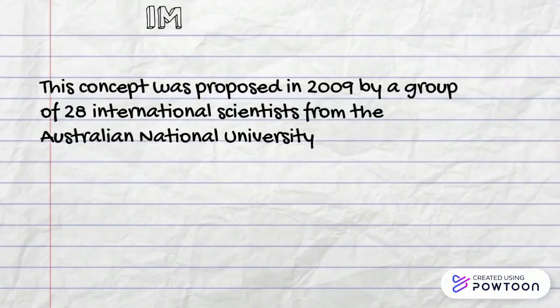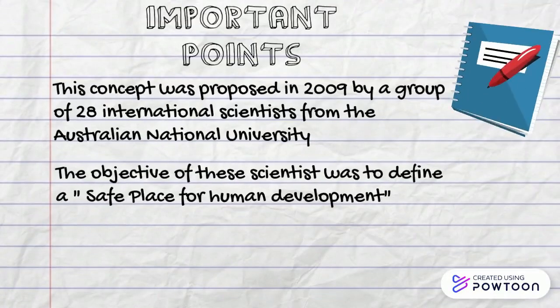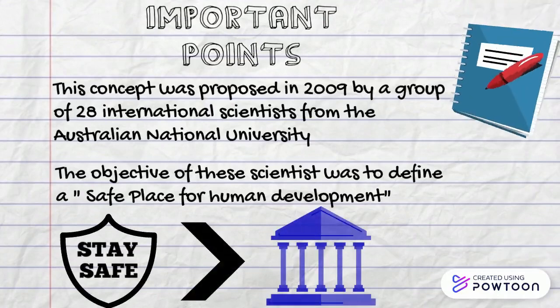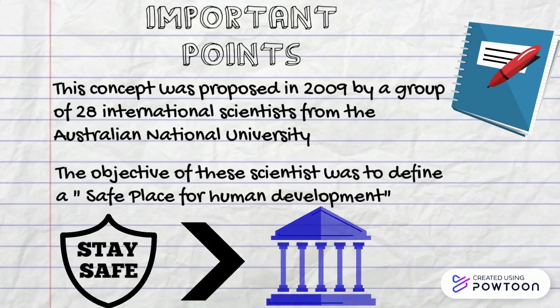This concept was proposed in 2009 by a group of 28 international scientists from the Australian National University. The objective of these scientists was to define a safe space for human development — a framework that can be used by governments at all levels, international organizations, civil society, the private sector, and the scientific community.